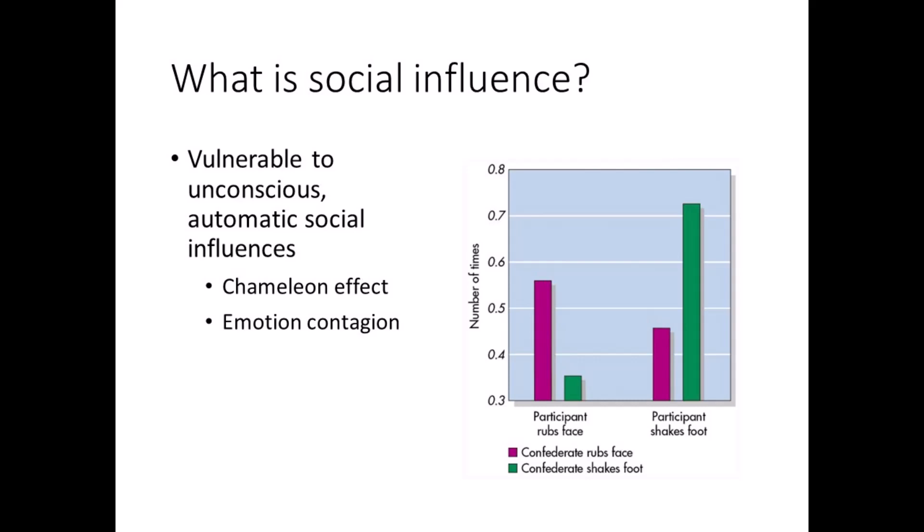Solomon Asch also studied conformity. Participants in groups of seven indicated which of three comparison lines—A, B, or C—matched the length of a standard line. The answer was obviously B, but the other six people, who were confederates working for Asch, gave the wrong answer. How often do you think the participants conformed and also gave the wrong answer?